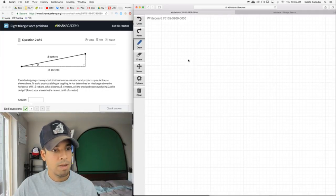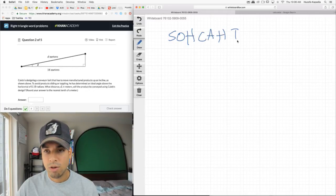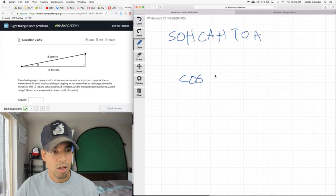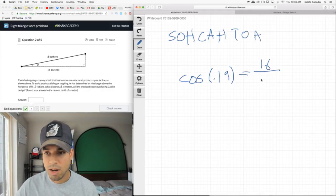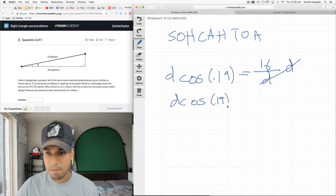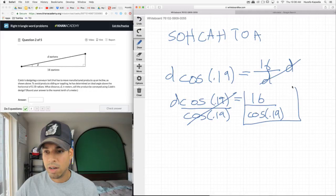So now it's the same thing, but what function do we need? We're given adjacent to the angle, and we're trying to find the hypotenuse. So adjacent hypotenuse in SOHCAHTOA tells me we need cosine. So we can take cosine of 0.19 equals adjacent 16 over hypotenuse, which is D. We're going to isolate D by multiplying both sides by D, then divide by cosine 0.19.